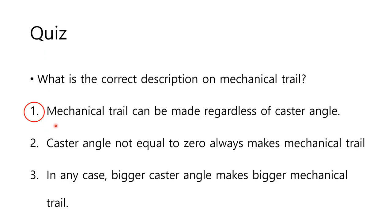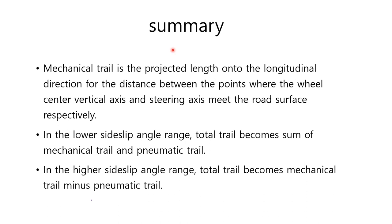The answer to the quiz is: mechanical trail can be made regardless of caster angle. Here is a summary. The mechanical trail is the projected length onto the longitudinal direction for the distance between the points where the wheel center vertical axis and steering axis meet the road surface, respectively. In the lower side-slip angle range, total trail becomes the sum of mechanical trail and pneumatic trail. In the relatively higher side-slip angle range, total trail becomes mechanical trail minus pneumatic trail.